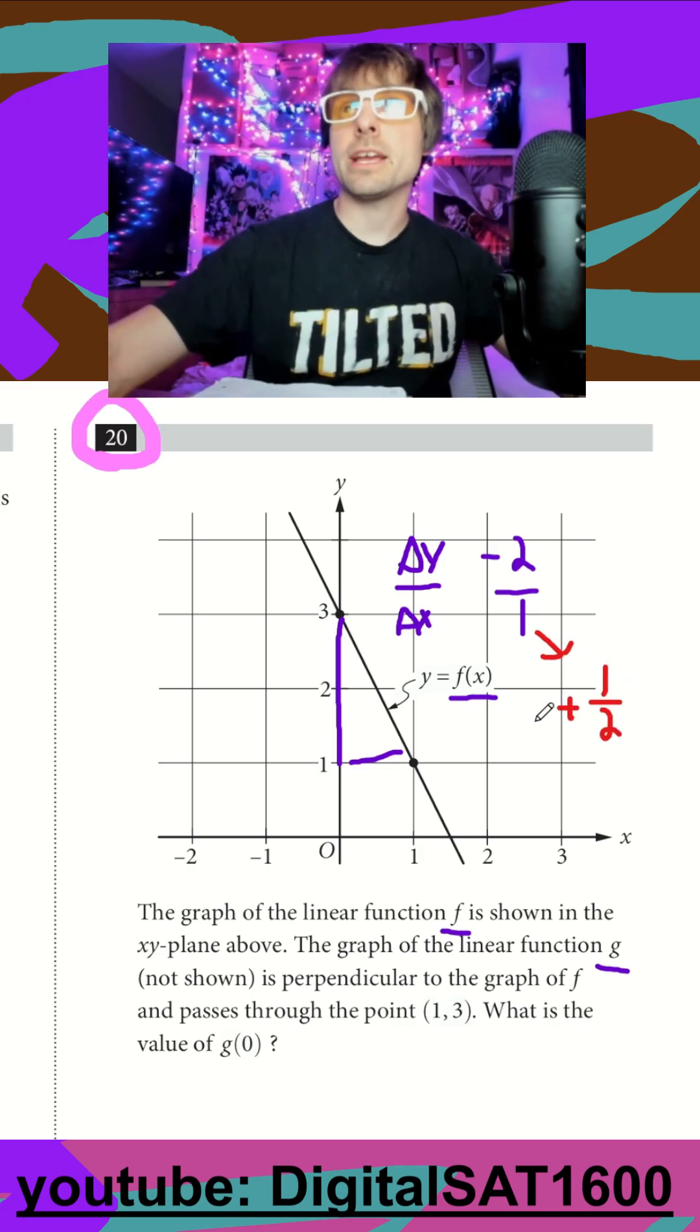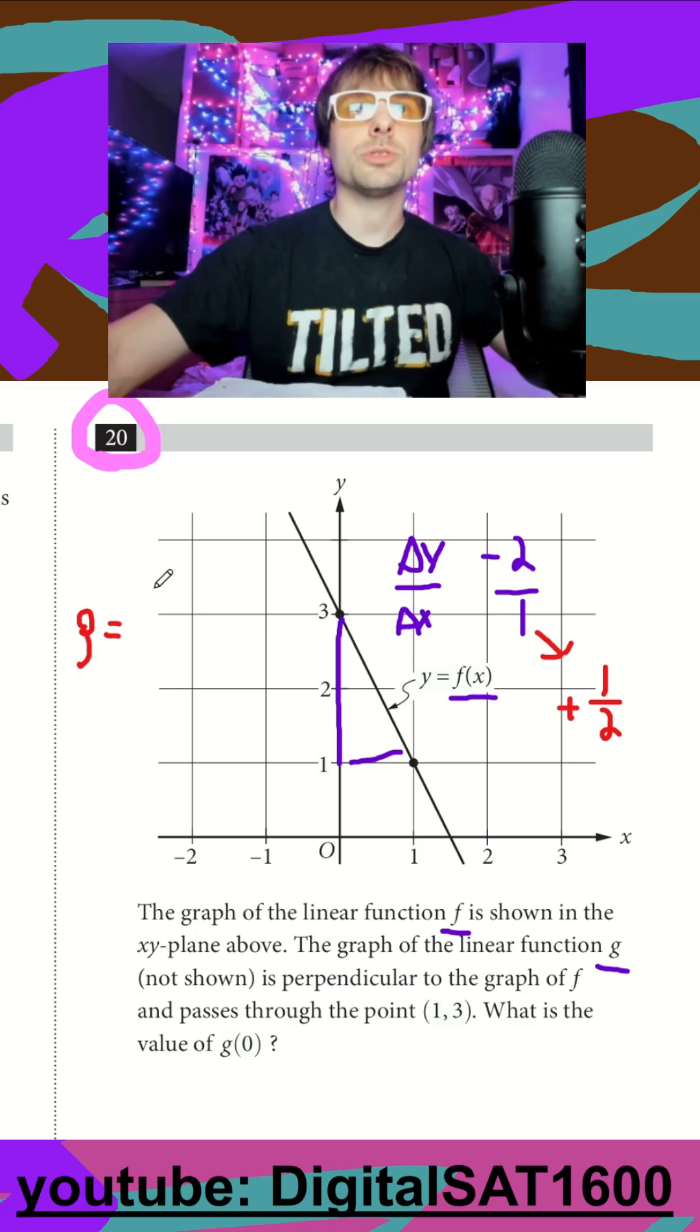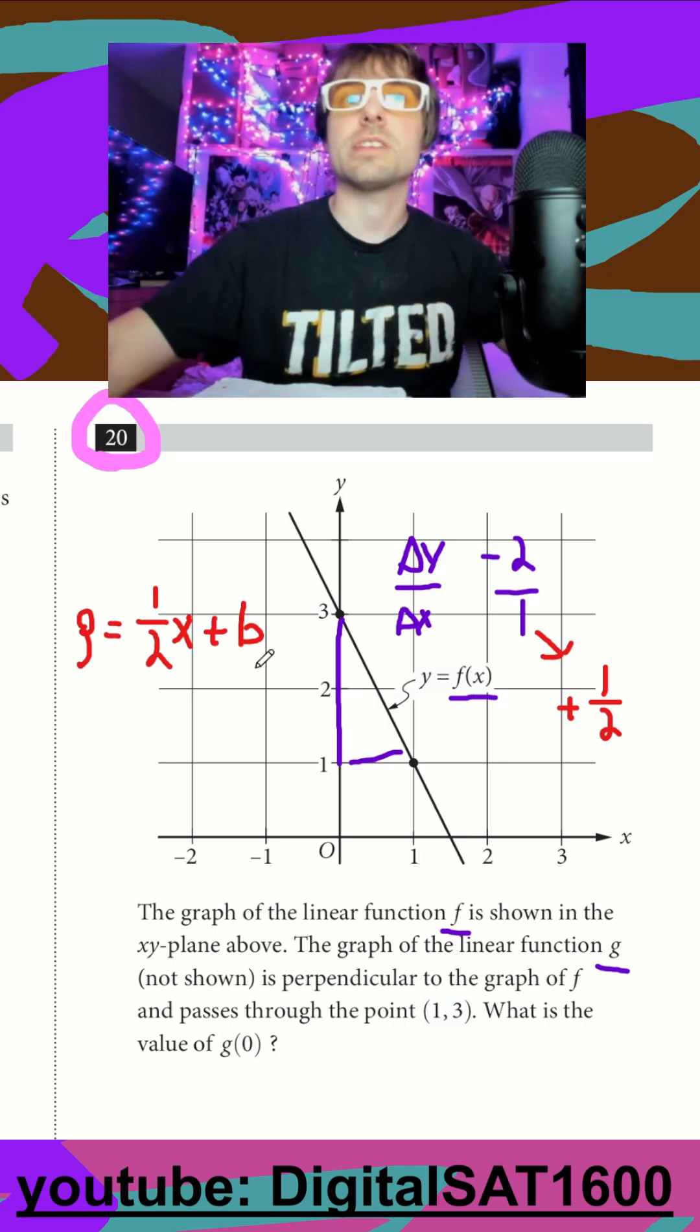So I start my equation for g now. I know that g is going to be equal to 1 half x plus b, but remember they're going to have to give us a point or something to figure out what our y-intercept is.